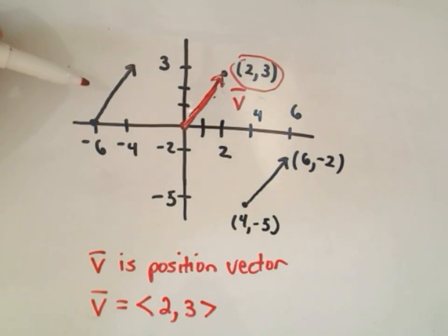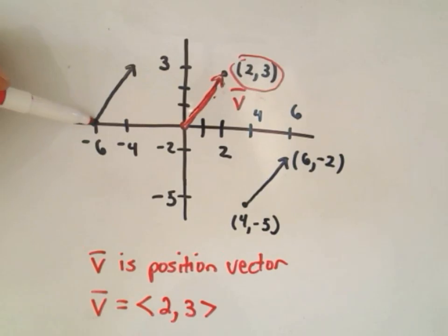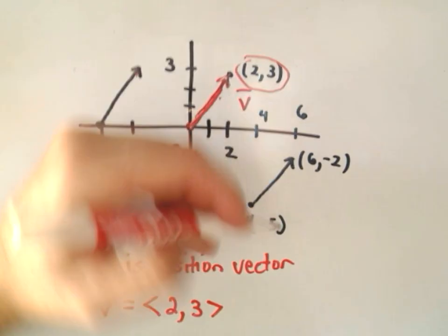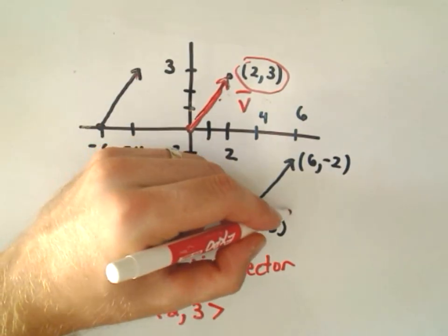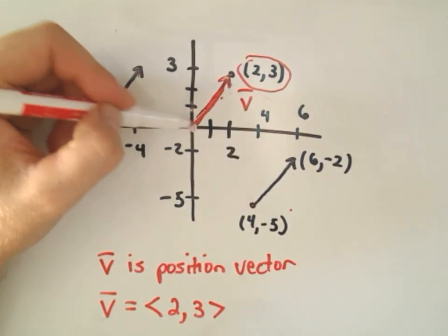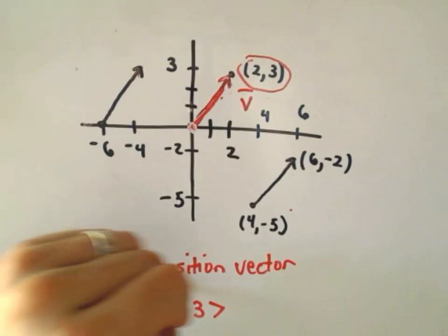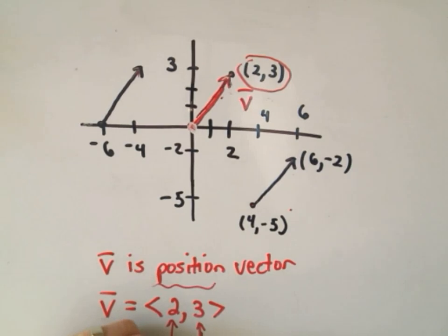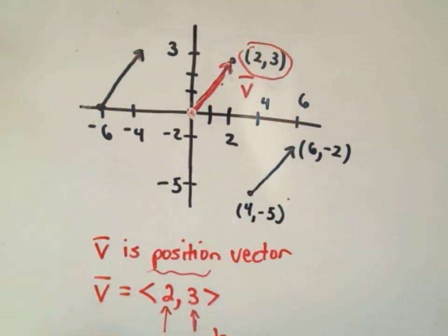As we talked about, it doesn't matter where vectors are situated in the plane. This vector also goes two units to the right and three units up, so it has the same direction and length as our red vector. Likewise, the vector down here starting at (4, -5) also goes two units to the right and three units up. All of these are equivalent vectors. When we situate our vector at the origin, we call that the position vector. The values 2 and 3 are called the components of the vector.